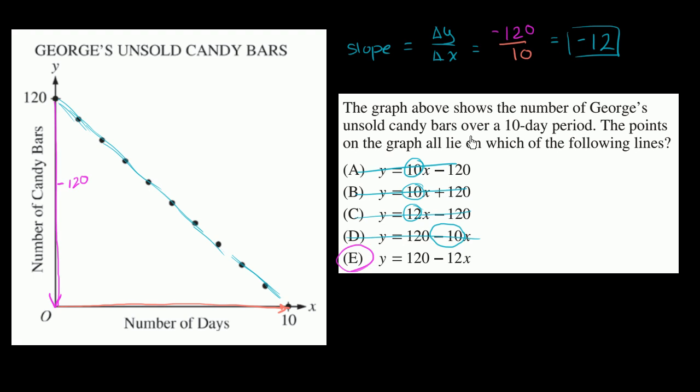But we could keep going. Even if this was a free answer, we could still figure this out. Because we know that the slope of a line, or the equation of a line, is y is equal to your slope, your slope times x plus your y-intercept.